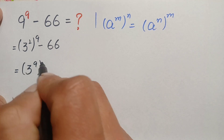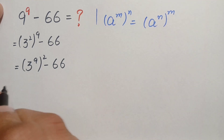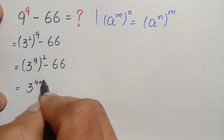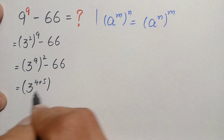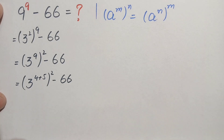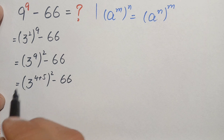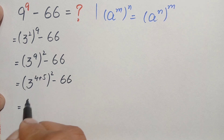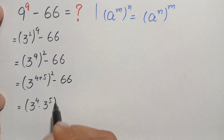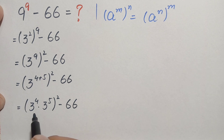So using this exponential identity, we move the 2 out, and this becomes 3 raised to power 9, whole raised to power 2, minus 66. Next, we can write the exponent 9 as 4 plus 5, giving us (3^4 × 3^5) whole raised to power 2, minus 66. We will use another exponential identity and spread these two powers for 3.